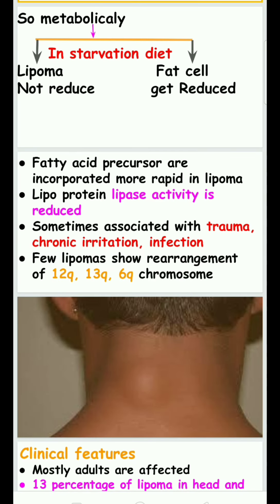Fatty acid precursors are incorporated more rapidly in lipoma. At the same time, lipoprotein lipase activity is reduced. Lipoprotein lipase is a protein that digests lipoprotein lipid cells, so its decrease leads to an increase in the number of fat cells, leading to the formation of lipoma.